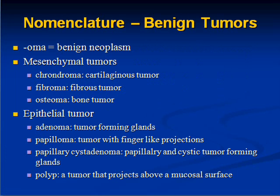Let's get into nomenclature. There is generally a pretty consistent system, with some exceptions. Most benign tumors end with -oma. Most malignant tumors end with carcinoma, sarcoma, or lymphoma. Mesenchymal tumors are derived from tissue we know as mesoderm — what we call connective tissue. So a benign tumor of cartilage would be a chondroma, of fibrous tissue a fibroma, of bone technically an osteoma. If you put the word 'sarc' toward the end, that gives the malignant counterparts — but we'll get to that later.